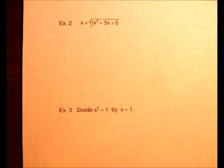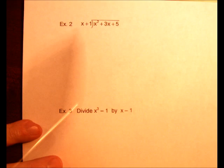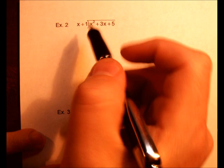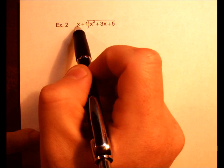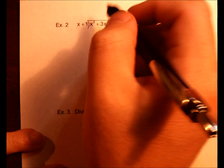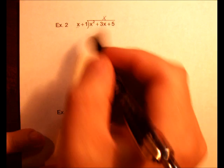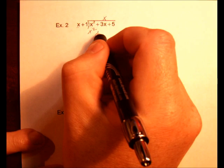It is already written out for us. It would be x² + 3x + 5, we're going to divide that by x + 1. Same exact process, a little bit easier here, shorter. So we have x times what gives you x²? That would be x. So we multiply x times x is x², x times 1 is x.